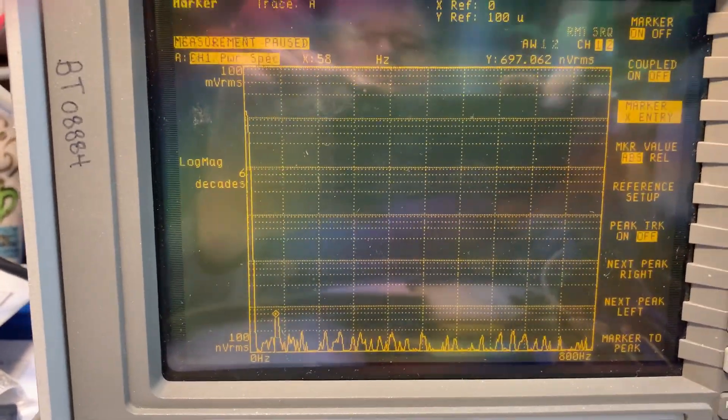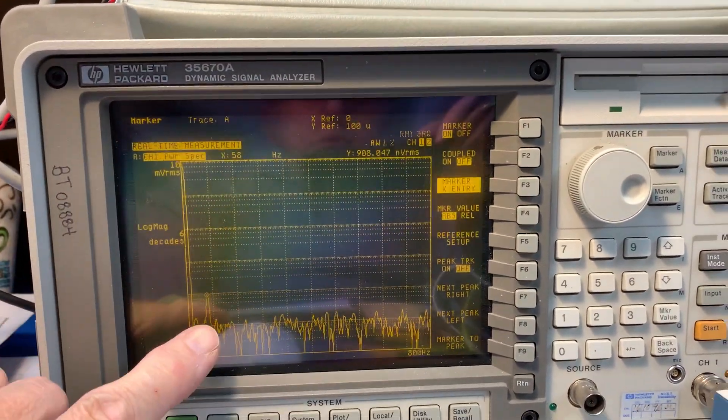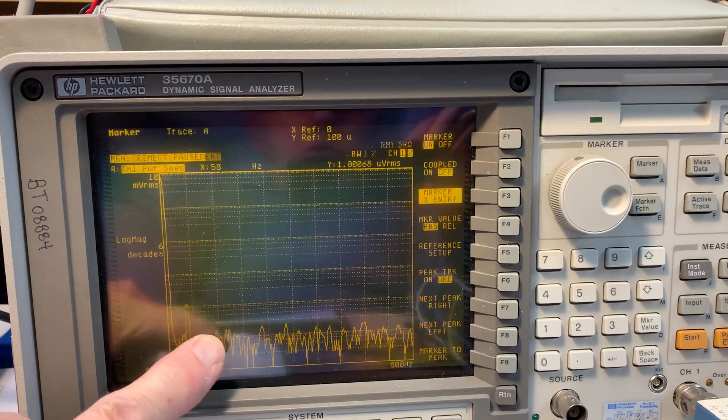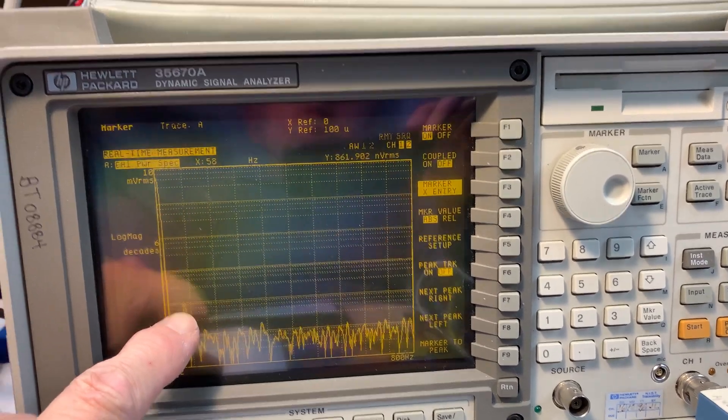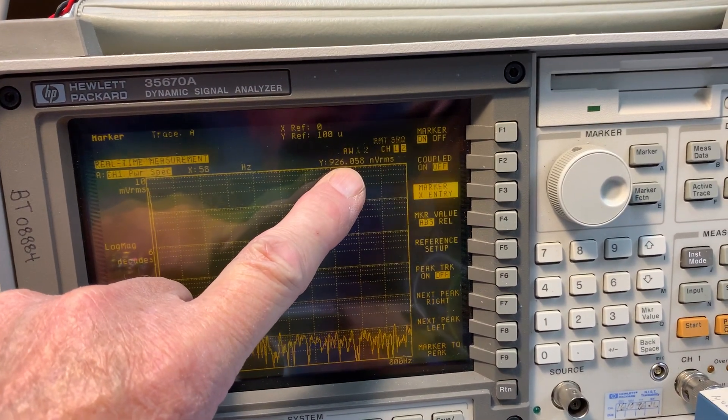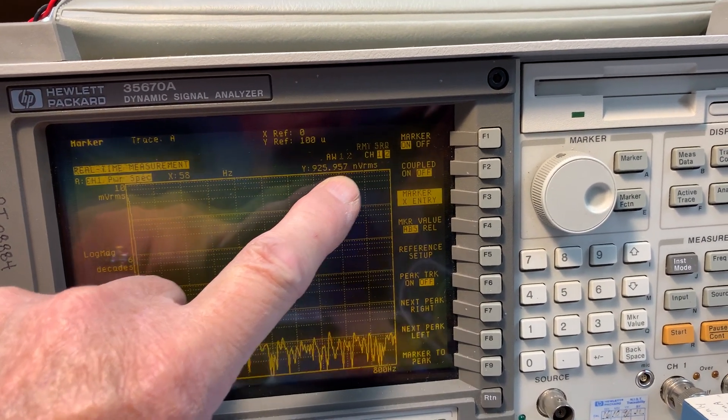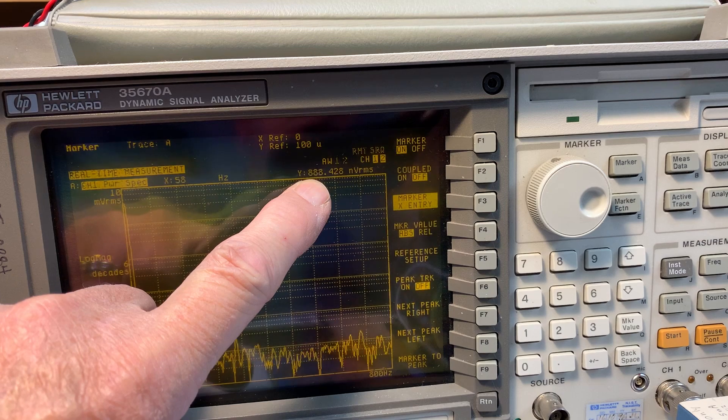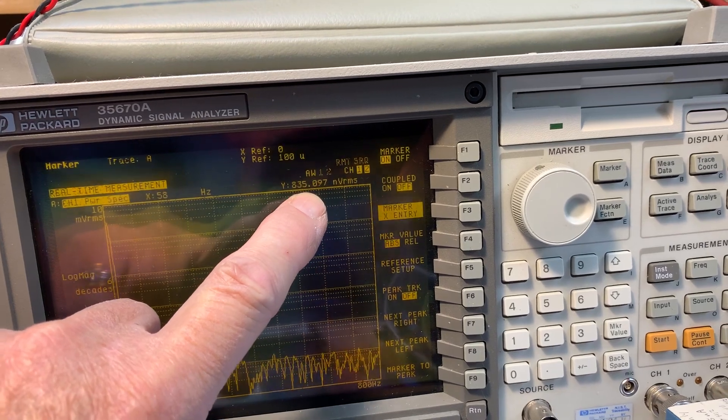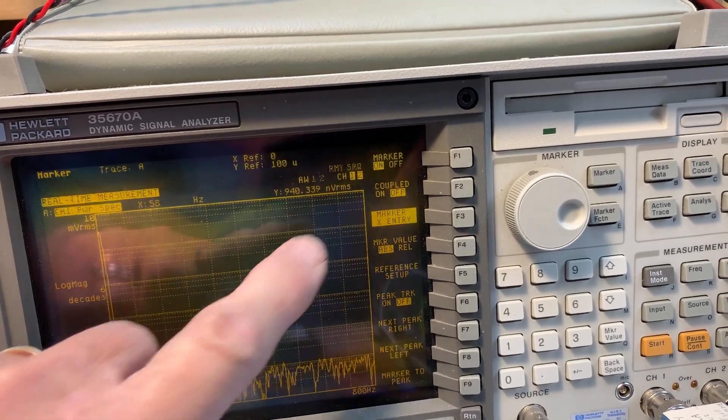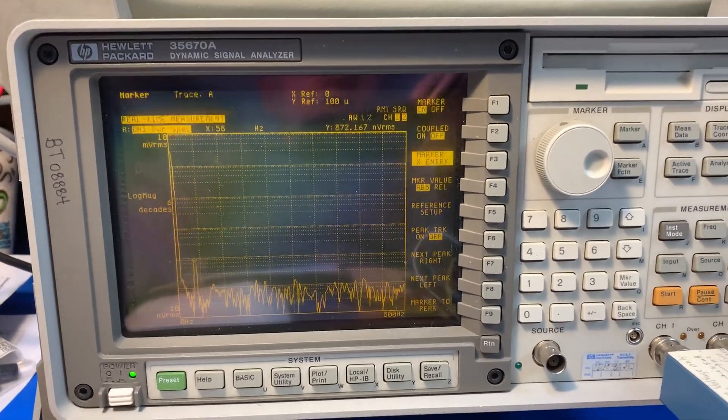Now, it takes a while for the DSA to auto range, but you'll see now all those spurs are disappearing and the thing is still struggling to auto range because the level's so low. Look at what we've got now. That's a N that's for nano. So we've got just below one micro volt RMS. So that's a pretty significant reduction in 60 Hertz amplitude.